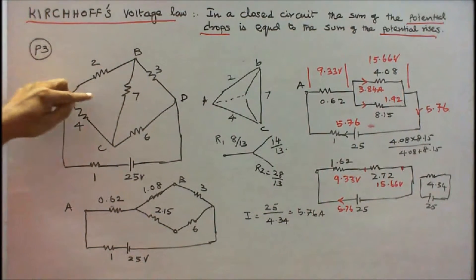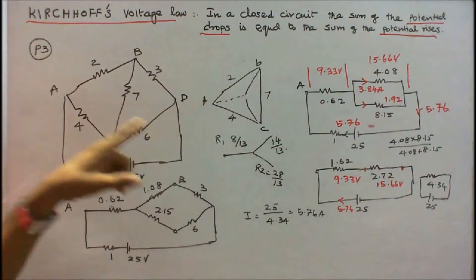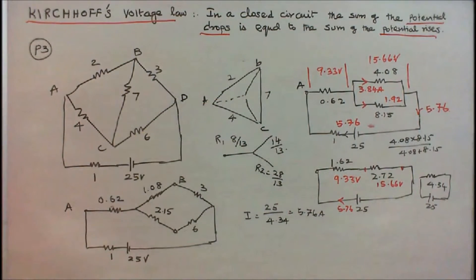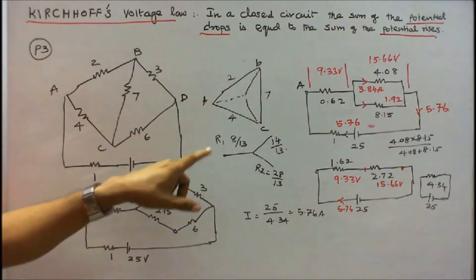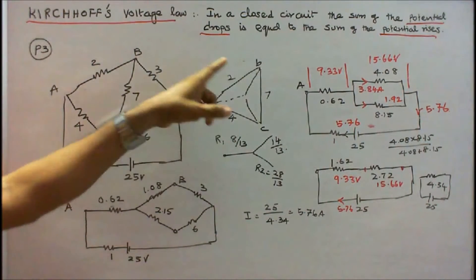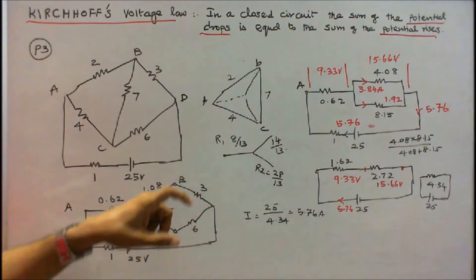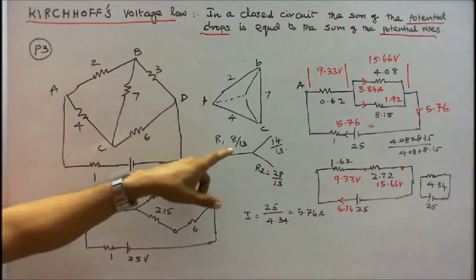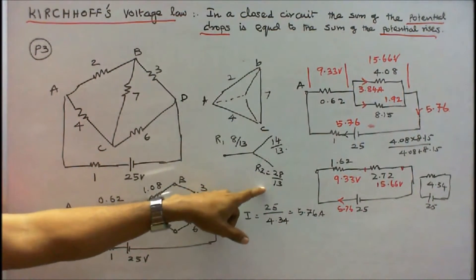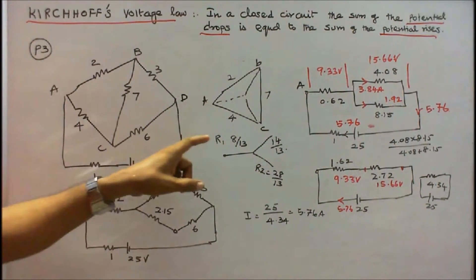I convert this delta into star — that is A, B, C with values 2 ohms, 4 ohms, and 7 ohms. Delta to star: R1 is equal to 4 × 2 divided by total resistance. Total resistance is 4 + 7 + 2 = 13 ohms. R1 = 8/13, R2 = 28/13, R3 = 14/13. I now know the star values R1, R2, R3 and I redraw the diagram.